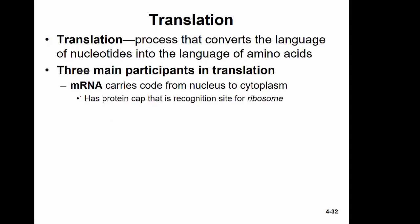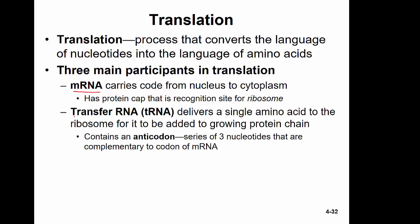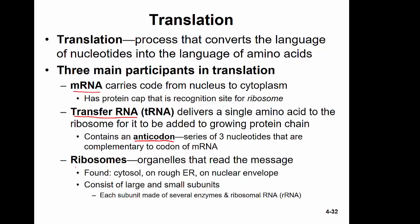There are three main participants in translation. First, mRNA carries the code to the cytoplasm and has a protein cap recognized by a ribosome. Second, transfer RNA delivers single amino acids to the ribosome; tRNAs have an anticodon — a three-nucleotide sequence complementary to the codon on the mRNA. Third, ribosomes are organelles that read the message; they consist of large and small subunits made of several enzymes plus ribosomal RNA, and can be found free in the cytosol, on the rough ER, or near the nuclear envelope.